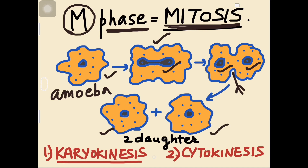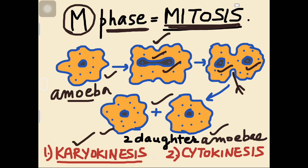This means if two daughter amoeba cells are created, the nucleus divides first, followed by division of the cytoplasm. In every cell division, first karyokinesis — nuclear division — occurs, then cytokinesis — division of the cytoplasm. Mitosis follows the same sequence: karyokinesis and then cytokinesis.